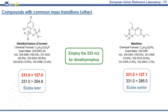For dimethylvinphos and malathion, the mass transition in common is 331 to 127. As for malathion, there isn't another precursor ion to track for, but the issues associated with the 331 precursor ion for dimethylvinphos can be solved by employing the dimethylvinphos isotopologue containing 2 Cl-35 atoms and 1 Cl-37 isotope, which results in a proton-adducted precursor ion of m/z 333.